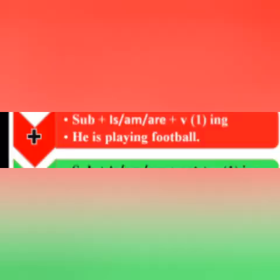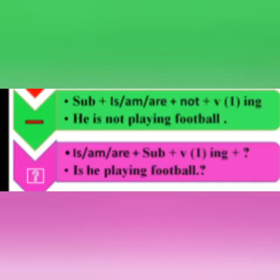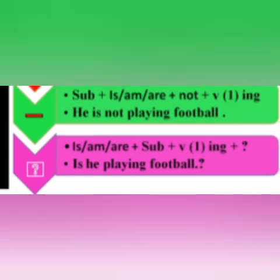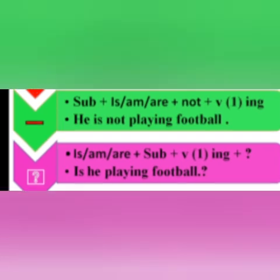Now you can see here is a structure of the positive sentence. Now we are going to make a negative sentence. How can we make a negative sentence? Firstly: subject, helping verb, not, and ING form of verb.